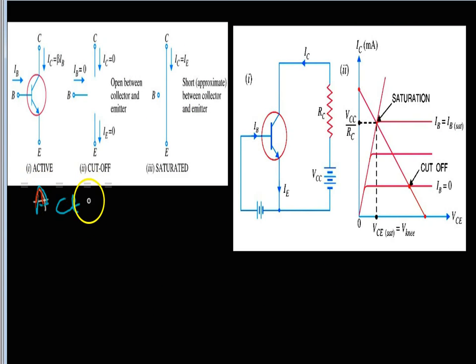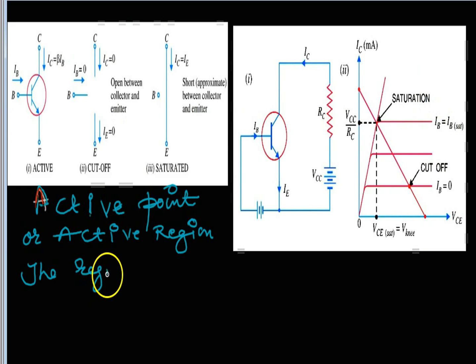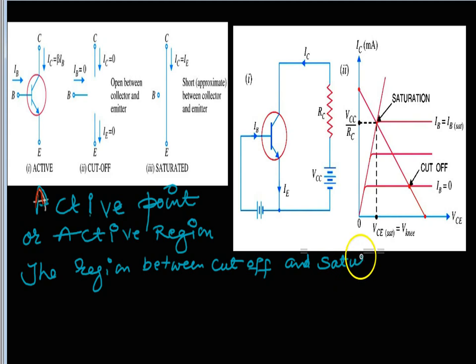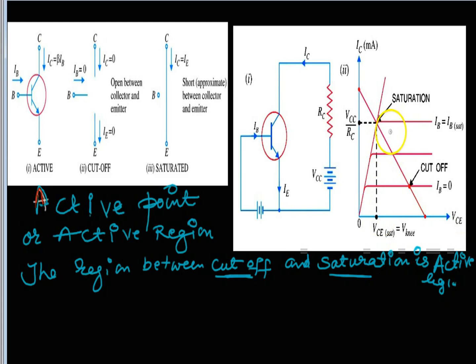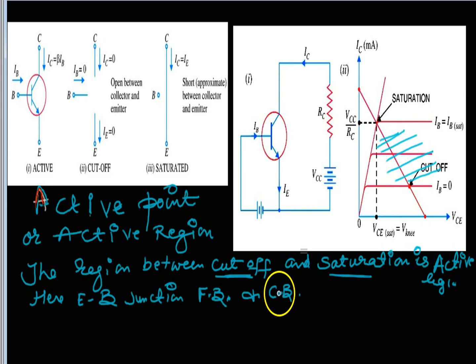Now we come to the active region. This is a very important region because the transistor normally works in this region. In this region, one junction is forward biased — the input junction, emitter-base, is forward biased — and the output junction, collector-base, is reverse biased. So the active region is the region between cutoff and saturation, and the transistor works here as an amplifier.